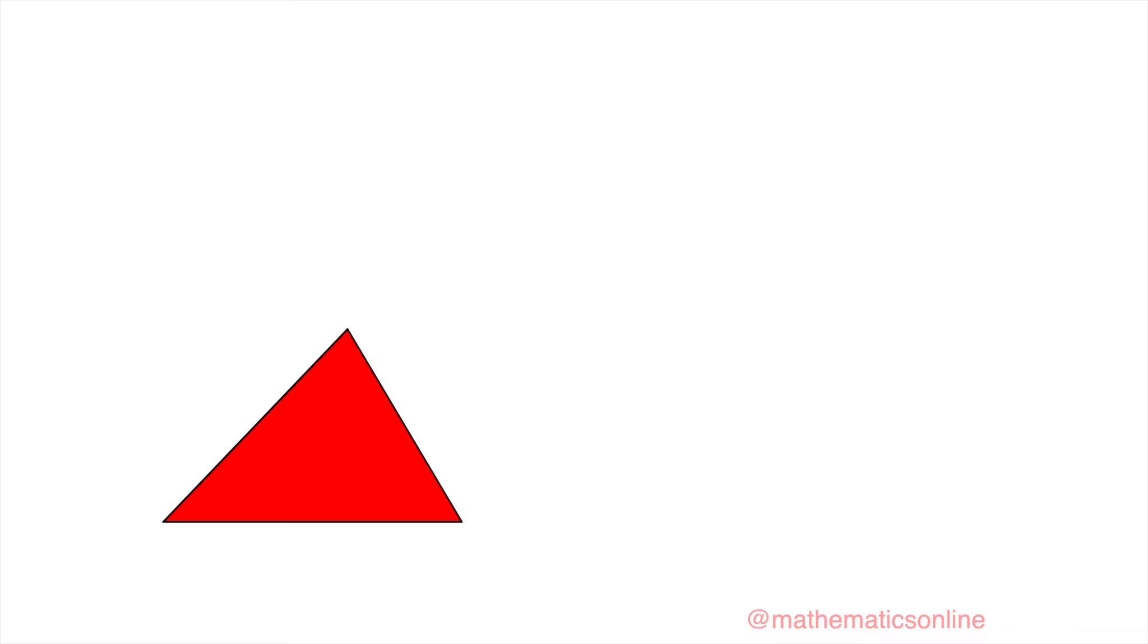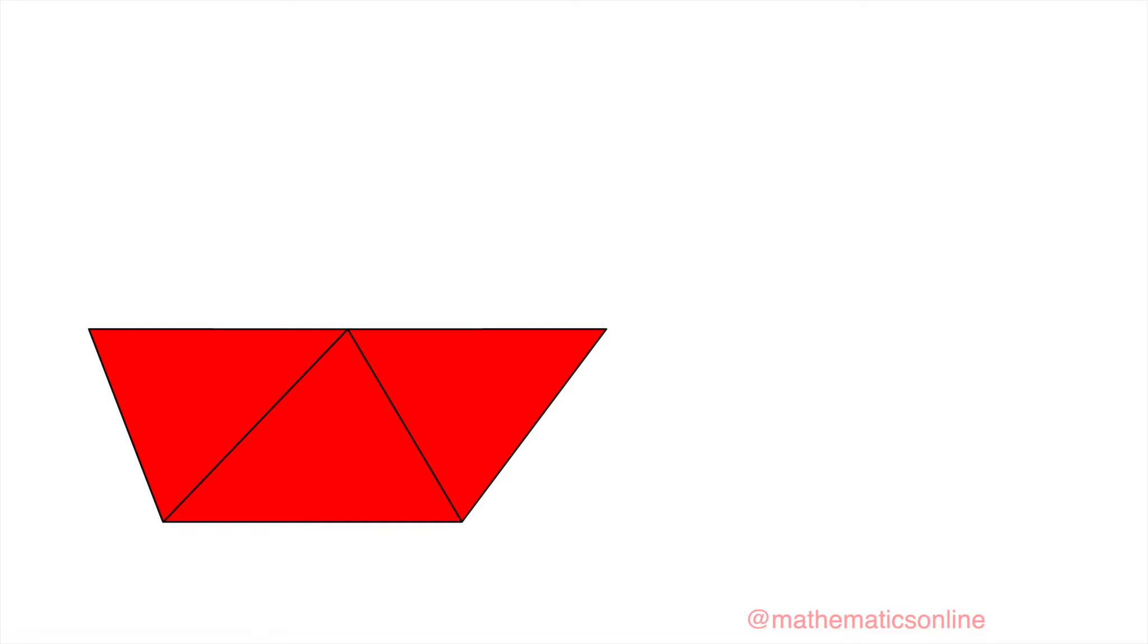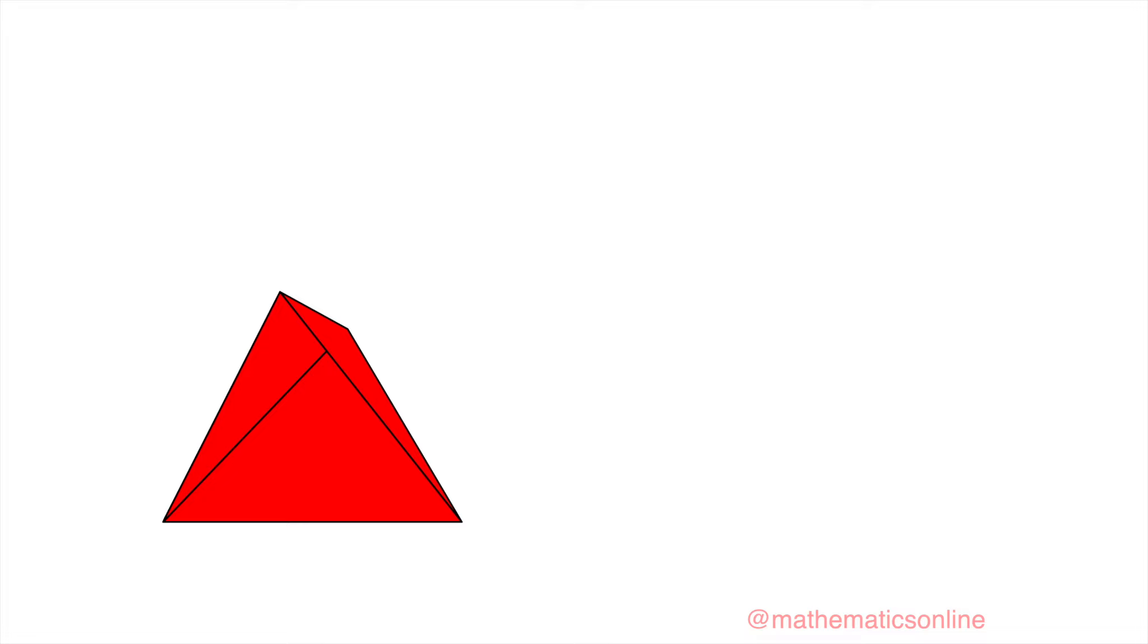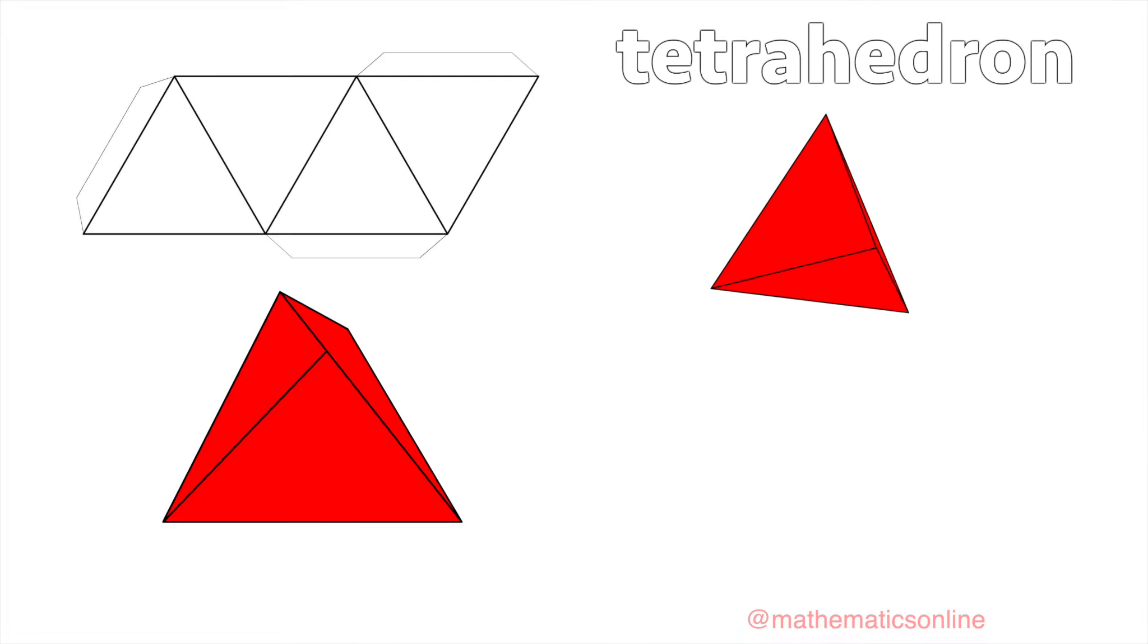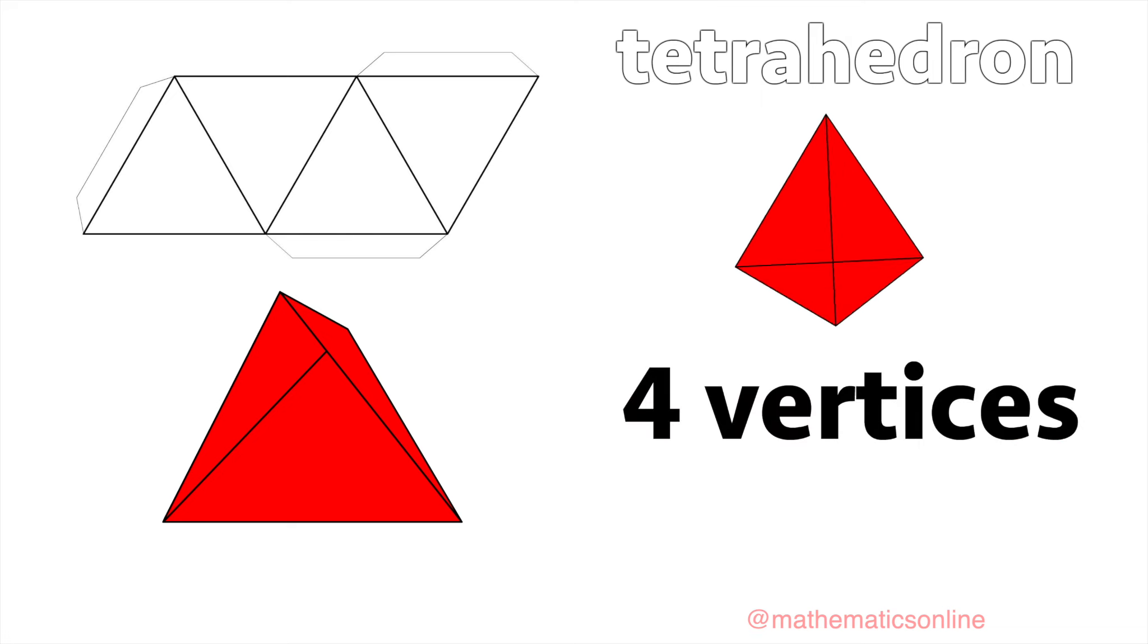If we start with one triangle, we can't build anything. If we have two, we can't create a solid. So we need three triangles to create the first vertex of a solid. These line up nicely to create the tetrahedron. The tetrahedron consists of four triangle faces. It has four vertices and six edges.